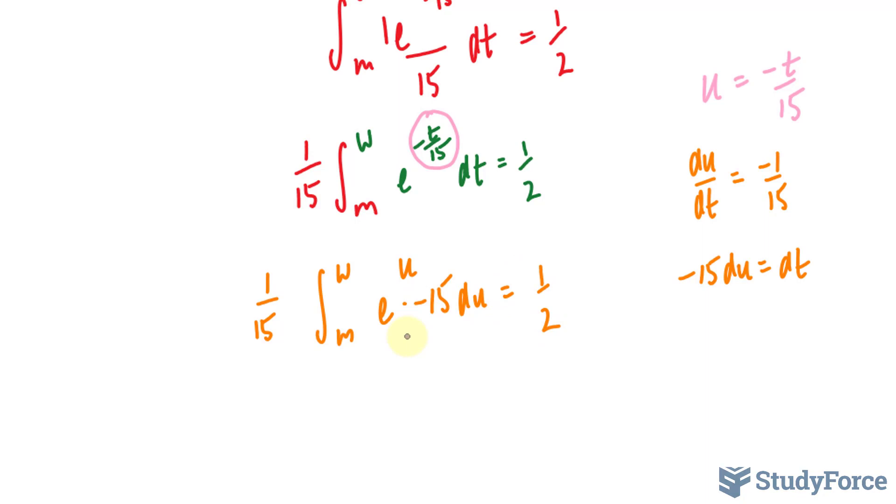This negative 15 factor can be pulled out. If I pull it out, it will cancel with this 15, and the negative will be on the outside. So negative integral from m to w of e to the power of u, du, equals one-half.